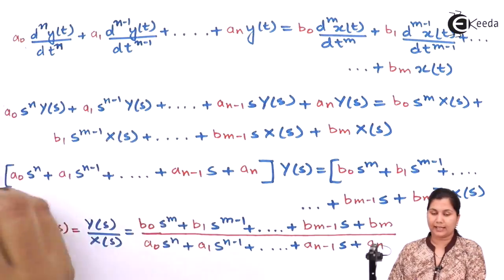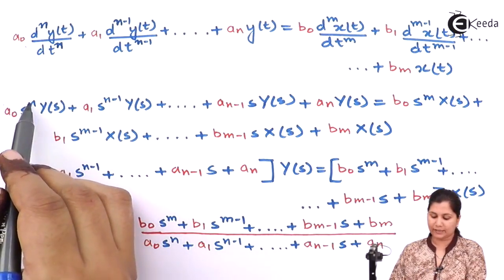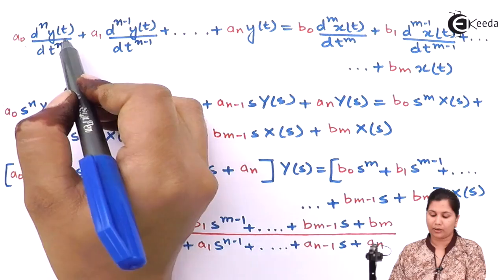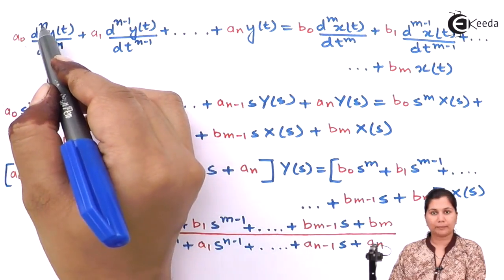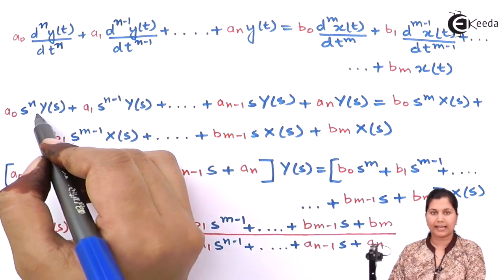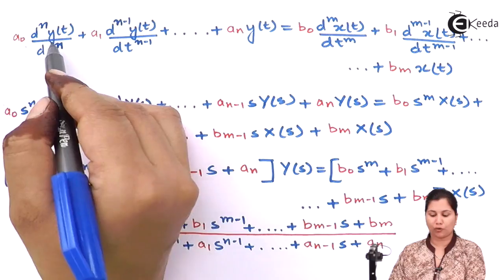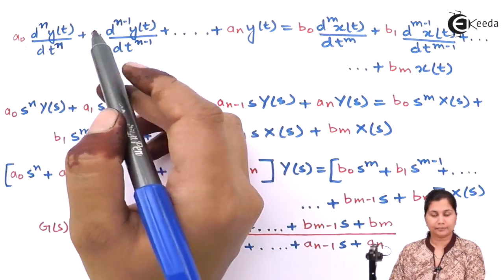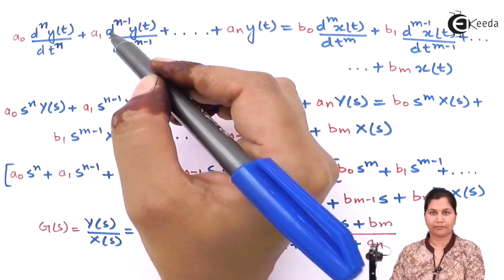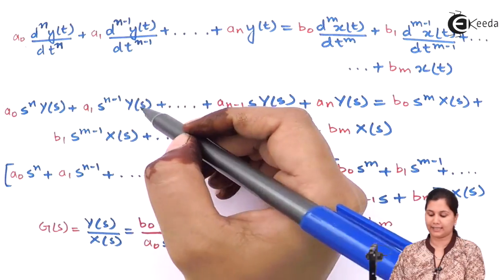Now, when we take the Laplace transform of both sides of the equation, we will get a0 * s^n * Y(s). The Laplace transform of y(t) is Y(s), and d^n/dt^n — the Laplace transform of a differential function gives s with the order as the power. The Laplace transform of the second term will be a1 * s^(n-1) * Y(s).